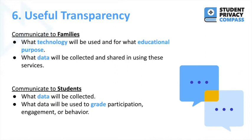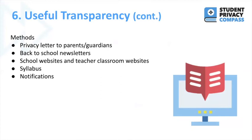For example, in an online setting, if a tool is tracking when students click away from their screens, educators should inform students and parents and explain how this information may be used to evaluate engagement. Here are different methods for communicating to families and students: a back-to-school newsletter, the school website or classroom websites, the syllabus if certain data is being used to grade participation, and continuous notifications as things are updated.